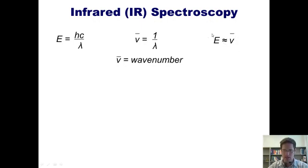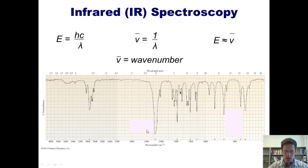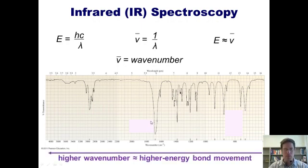Why do I care about this? If you look at an IR spectrum, you'll notice that the scale at the bottom is written in wavenumbers — the units are inverse centimeters. That means the higher the wavenumber, the higher energy will be the bond movement that it causes. The meaning of this statement will become clearer as we move forward.